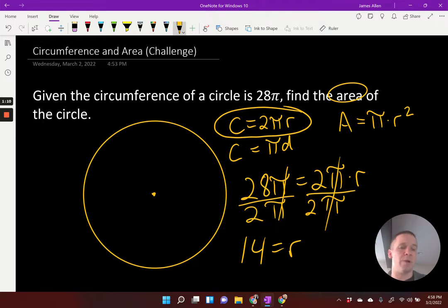And you might have been thinking, oh, the circumference is 28π. Half of 28 is 14. That's my radius. Awesome. That's fantastic. All right, so we've got our radius. Now we need to find our area.